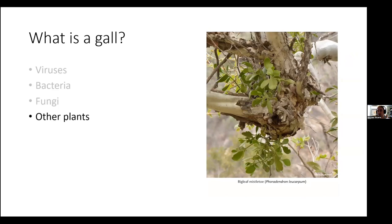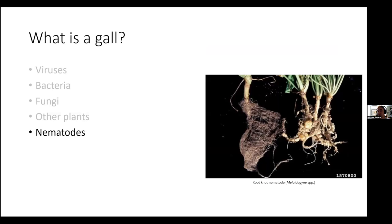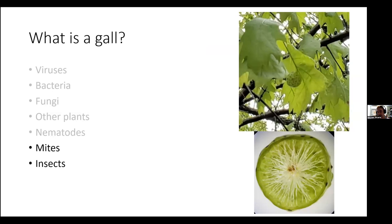Galls can be formed by other plants. Mistletoe are parasitic plants that grow on other plants, and when they push their roots into the host plant, they can form galls around the mistletoe. Nematodes are another important former of galls. Here are examples of root knot nematode, an important agricultural pest. On the left you can see tomatoes with normal roots, and on the right are roots affected by nematodes, which can really impact nutrient and water uptake. Finally, galls can of course be formed by mites and insects, and that's going to be the focus for the rest of the talk.